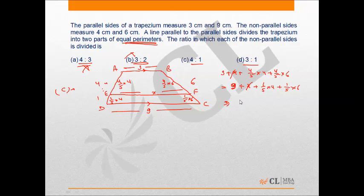And this gives me 11 is equal to 11. That means my two perimeters are the same for option C. Hence this is my final answer.